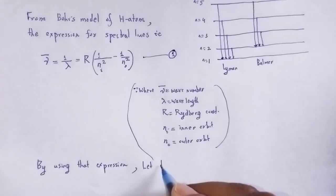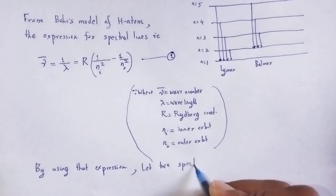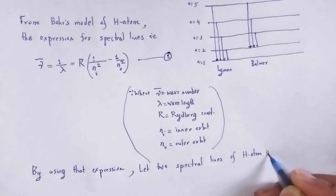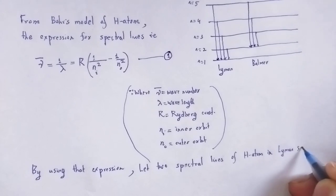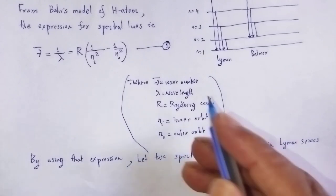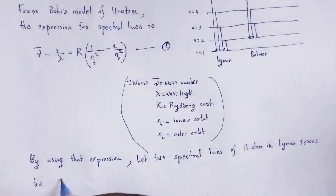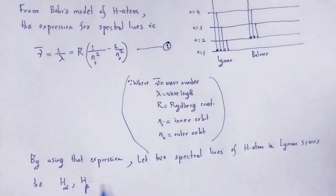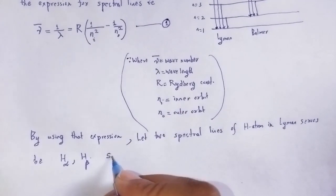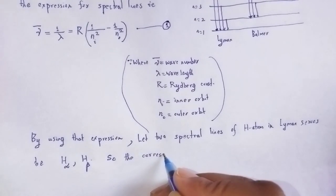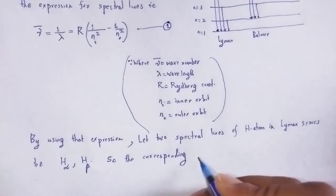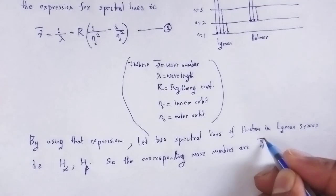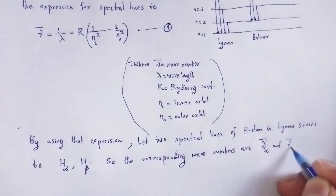Let us consider two spectral lines of the hydrogen atom in the Lyman series. Let the first spectral line be H-alpha and the second spectral line be H-beta. The corresponding wave numbers are nu-bar-alpha and nu-bar-beta.